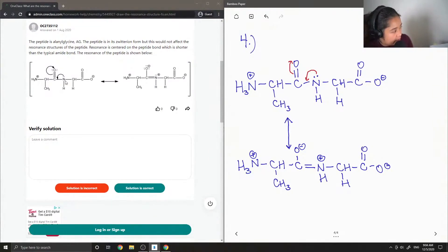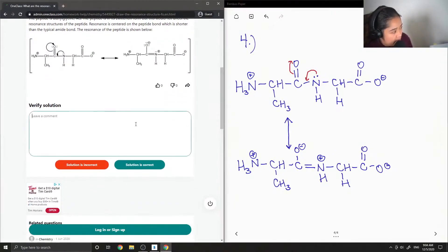Yep, so they show the lone pairs on the nitrogen coming down to form a double bond, and then the carbonyl comes up to form a singly bonded, negatively charged oxygen. So this solution is correct.